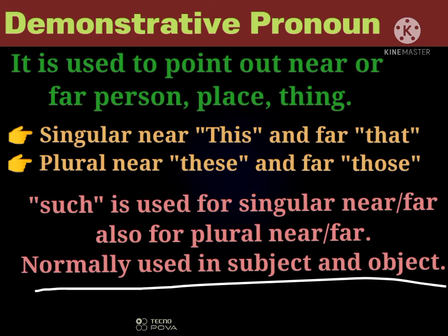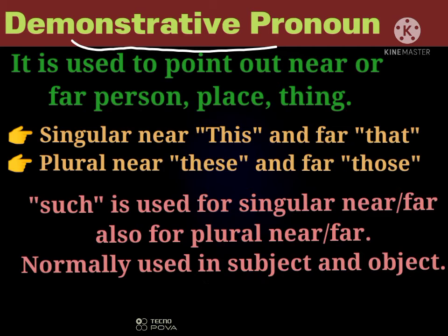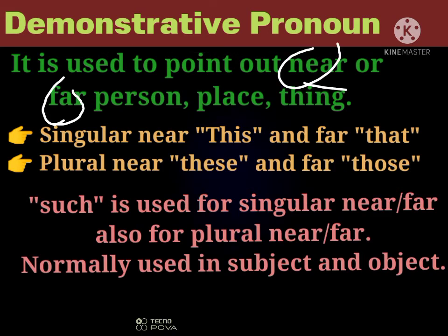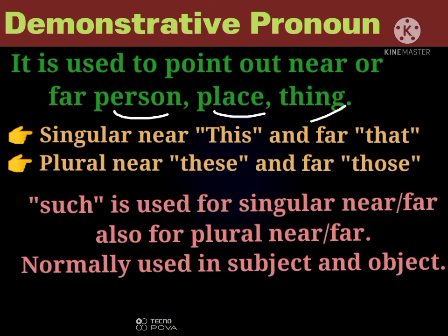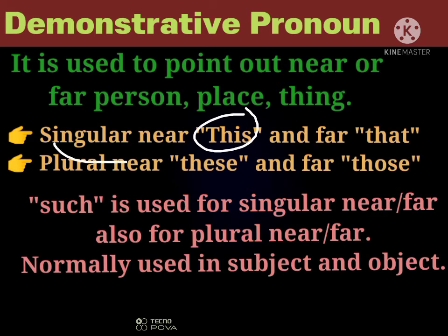Demonstrative pronoun क्या है — वो noun pronoun है जो point out करता है निजदीक और far away things को। इसमें person भी आता है, place भी आता है, और things भी आता है। हम 'this' singular के लिए इस्तेमाल करते हैं जो निजदीक हो — for example, 'this boy'।